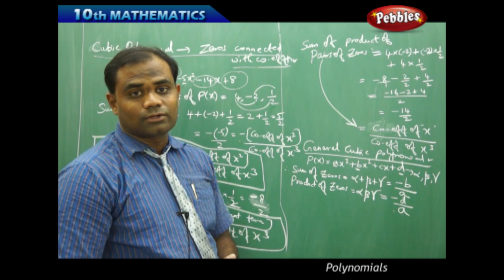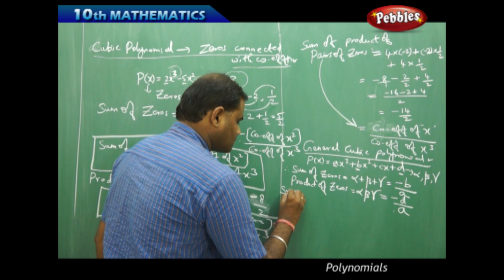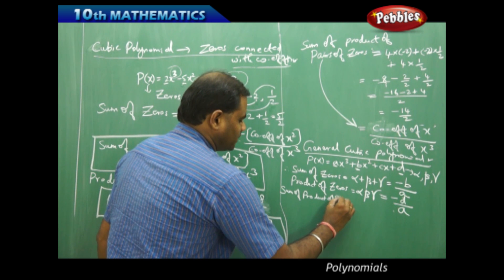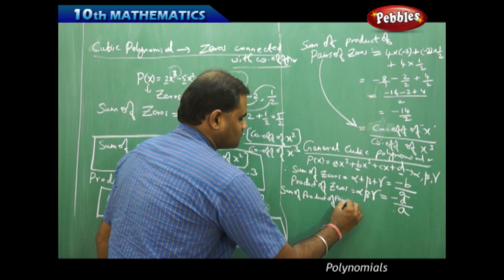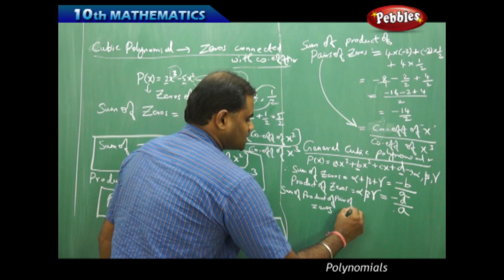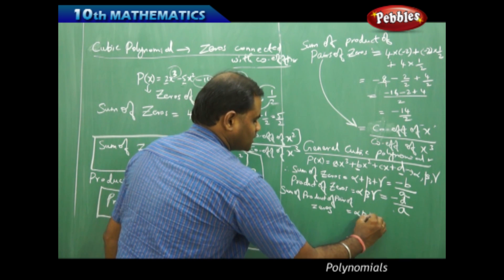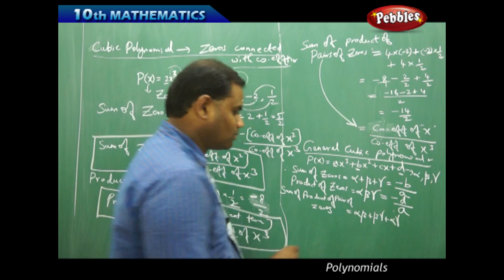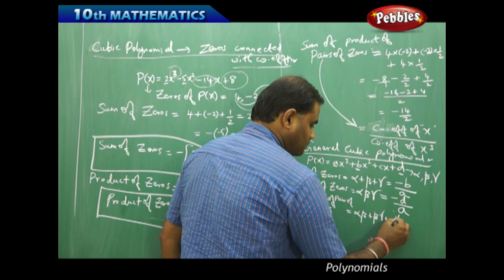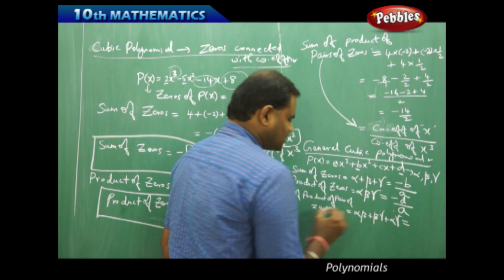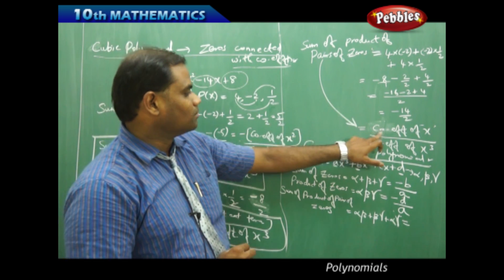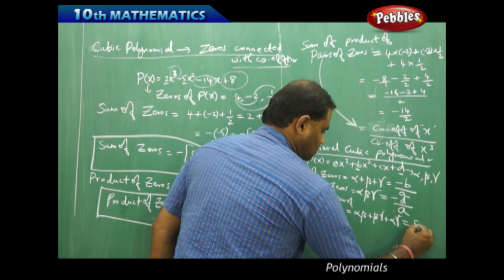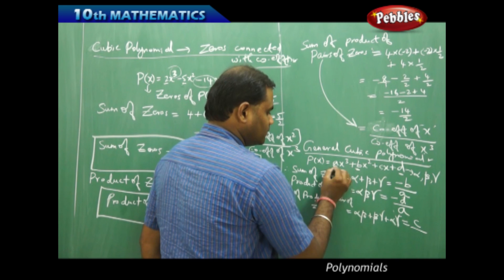The sum of product of pairs of zeros — alpha·beta plus beta·gamma plus alpha·gamma — is nothing but the coefficient of x divided by the coefficient of x cubed, which is C over A.